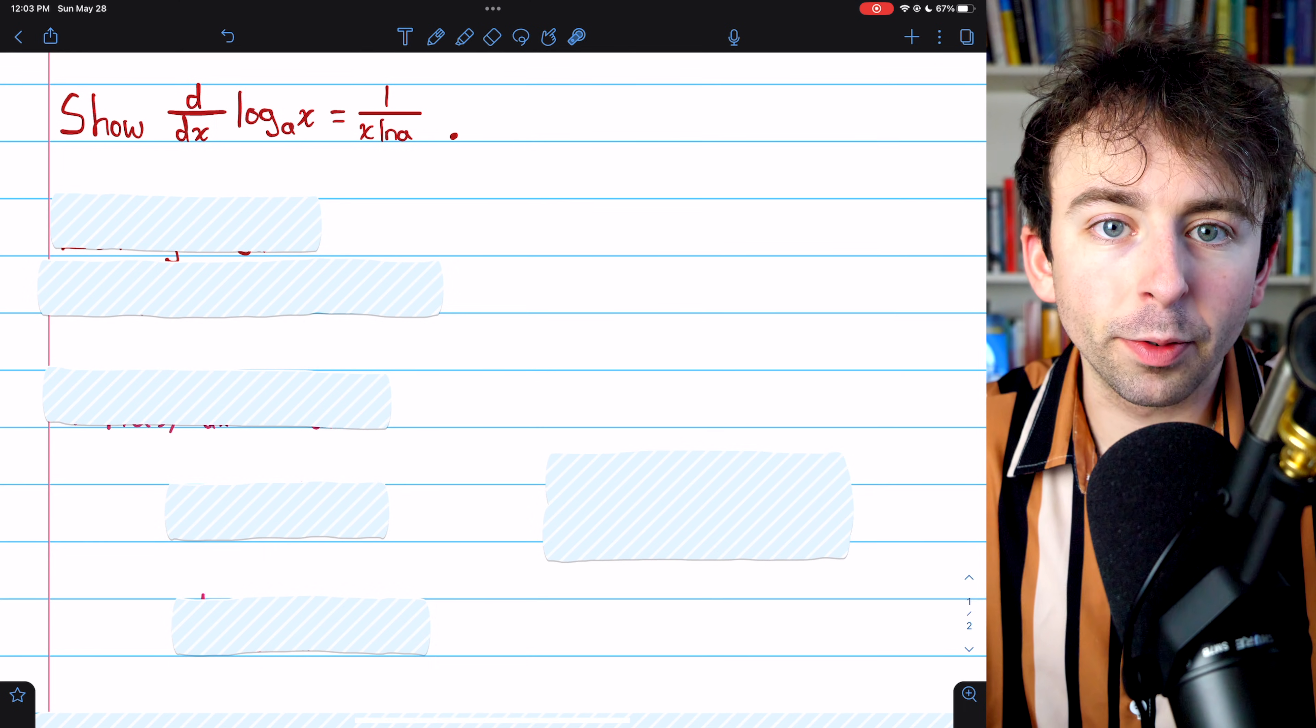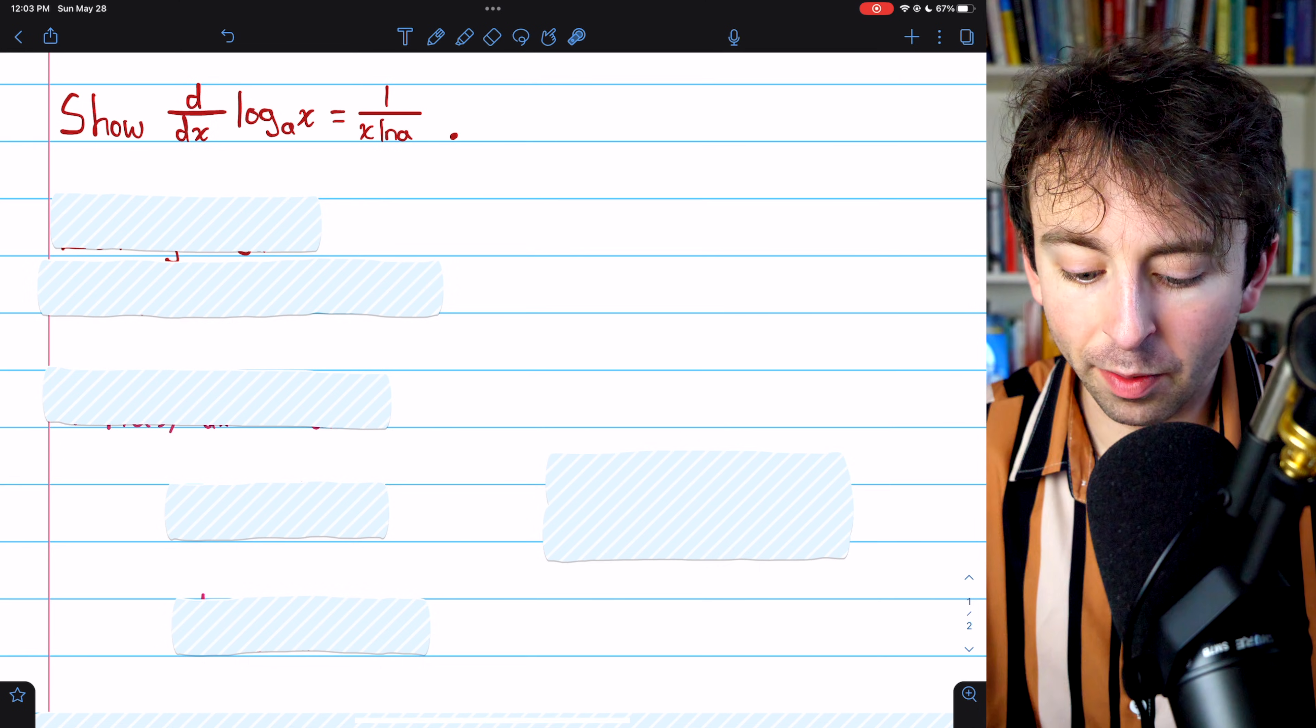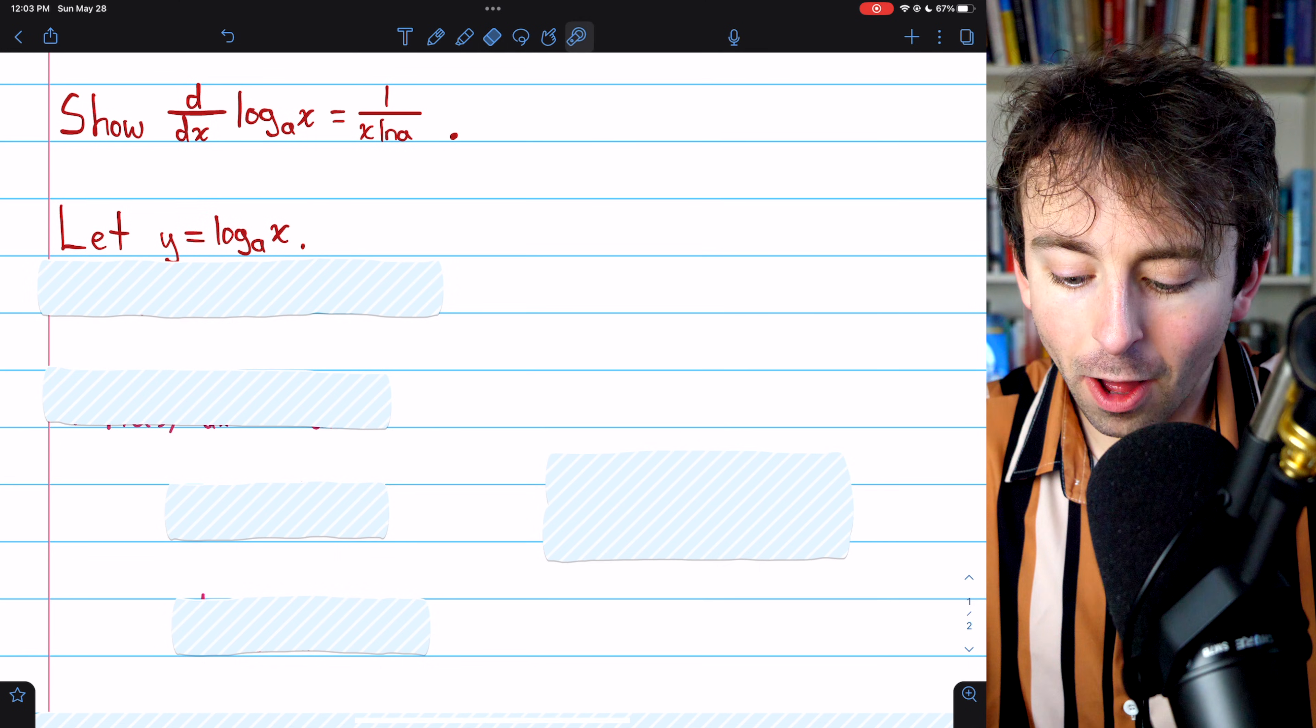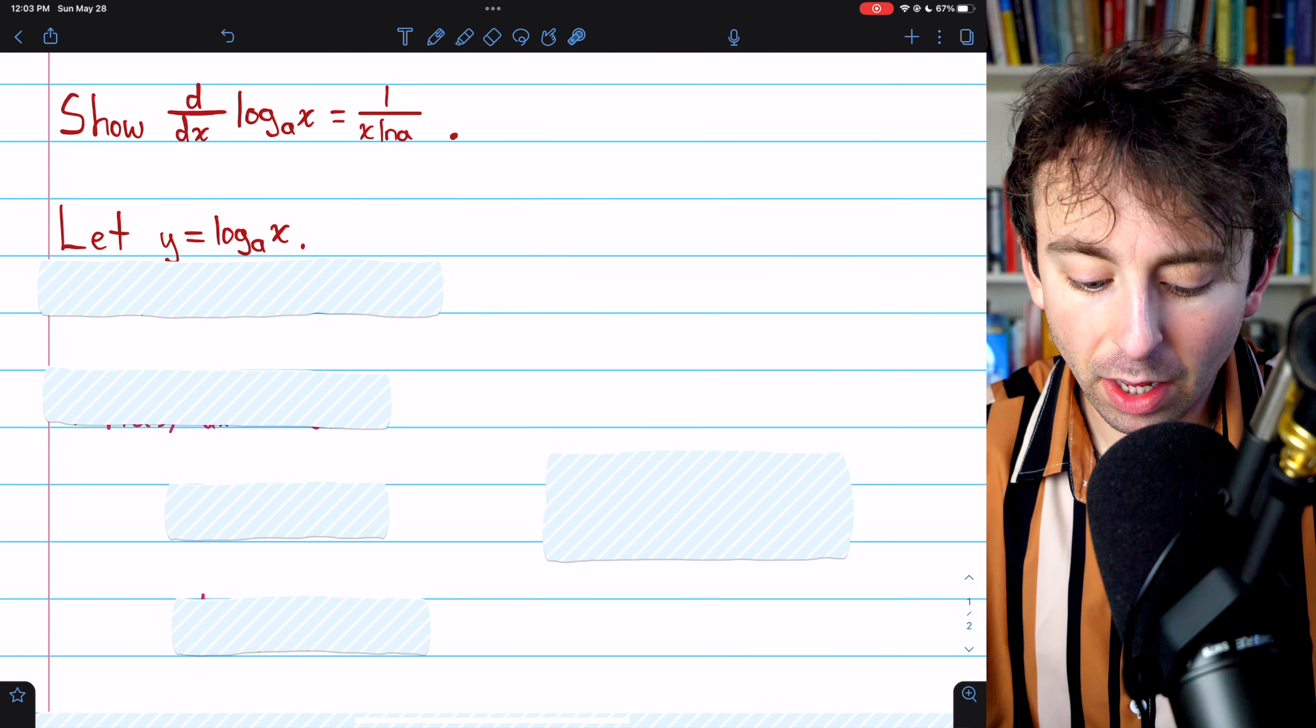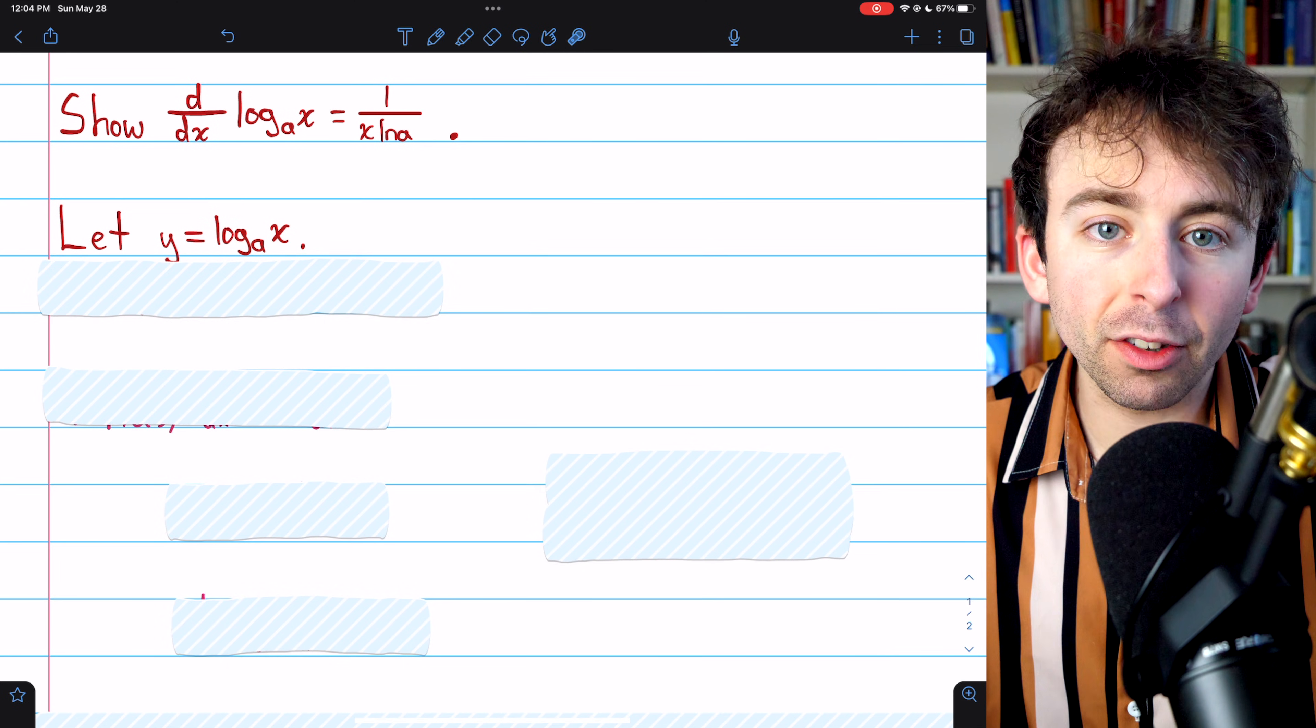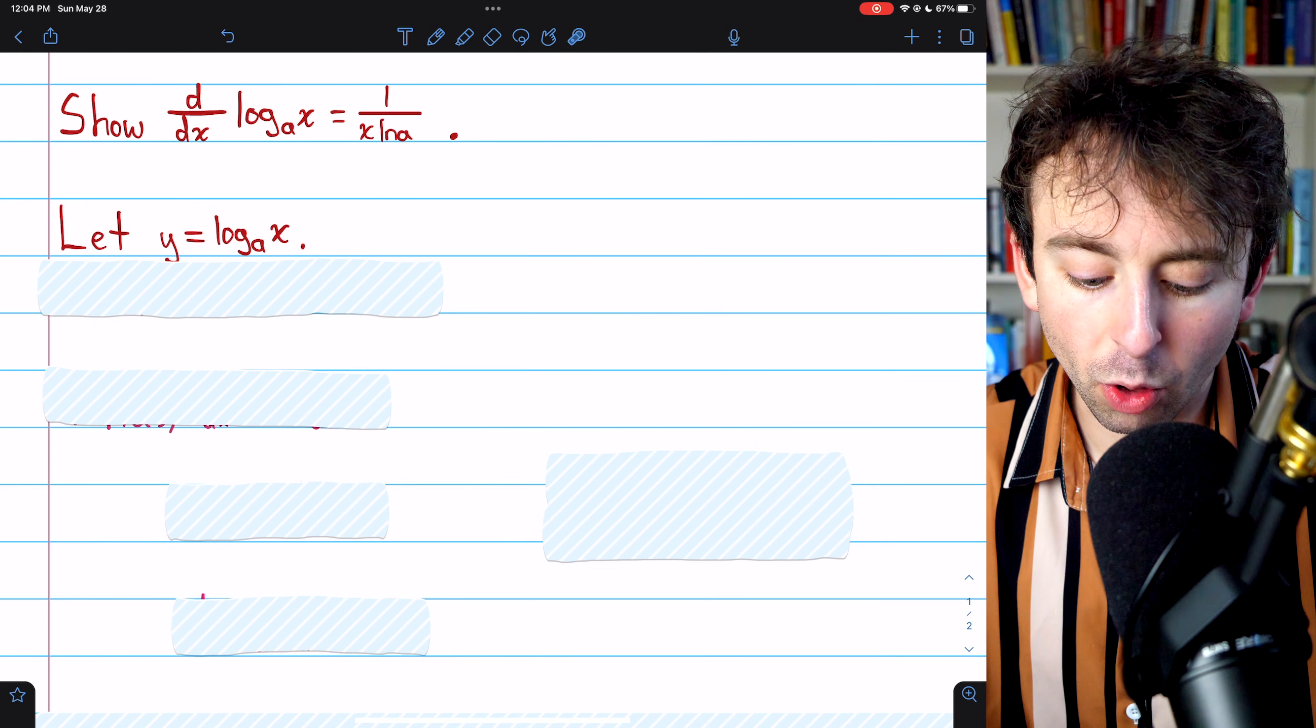In order to use implicit differentiation to take the derivative of log base a of x, let's begin by giving log base a of x a name. We'll call it y. Now, we can make things a little easier if we exponentiate both sides of this equation.